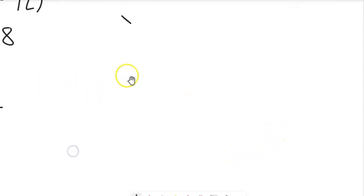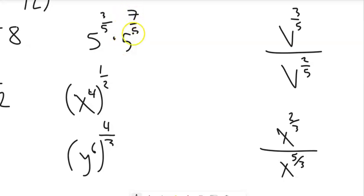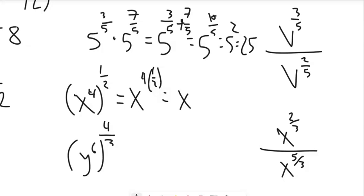Let's work through a few more. 5 to the 3/5 times 5 to the 7/5 — when multiplying with the same base, add the exponents. 3/5 plus 7/5 is 10/5, so we have 5 to the 10/5, which is 5 squared, which equals 25. For x to the 4th, to the 1/2 — power to a power means multiply: 4 times 1/2 is 2, so this is x squared.